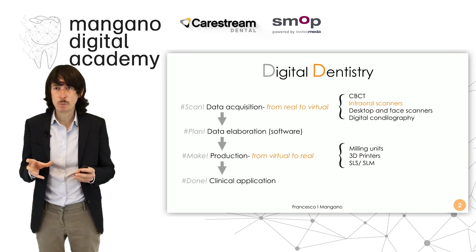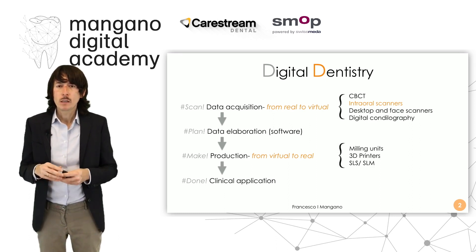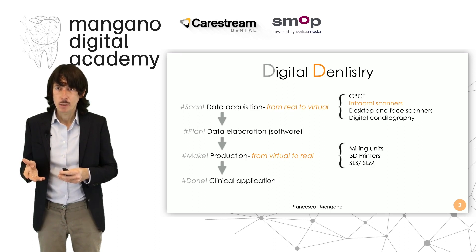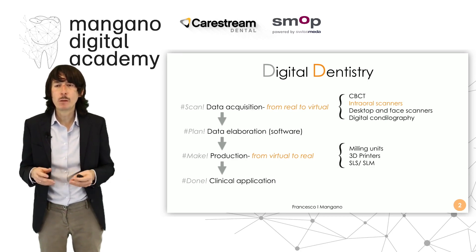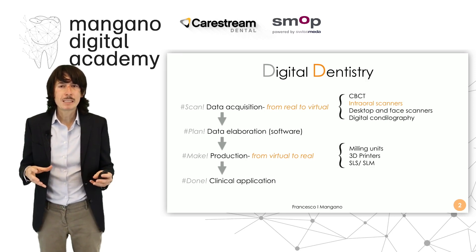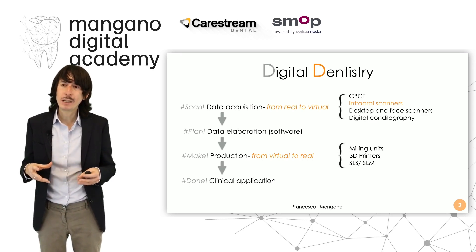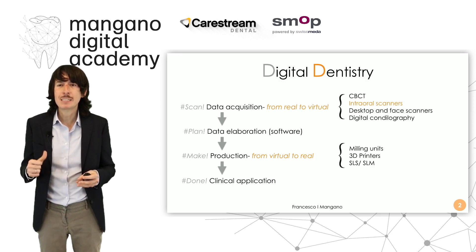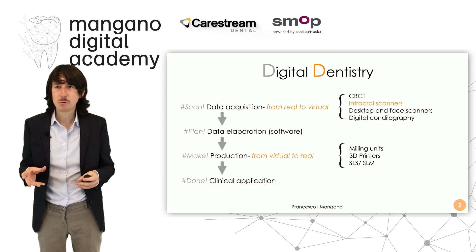When we have modeled our prosthetic restorations, our bridges, our full arches in the CAD software, we can make them and shift once again from the virtual to the real world by means of very powerful devices and machines like milling units, 3D printers, and selective laser sintering or selective laser melting machines. Then we have our crowns, our bridges, our surgical guides, our ortho devices ready for clinical use. So we have four phases in digital dentistry: scan, plan, make, and done — and that is the essence of the workflow.